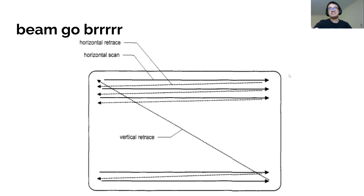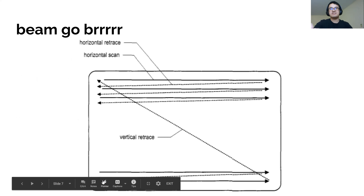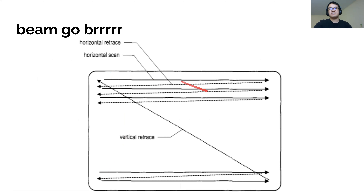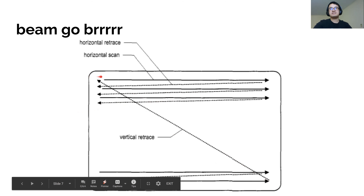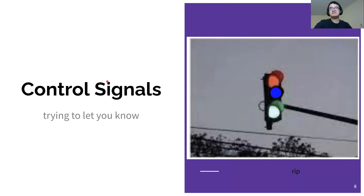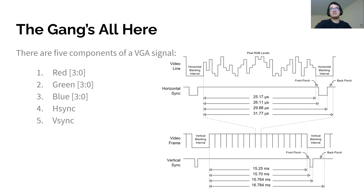Here's a diagram demonstrating that idea. The electron gun goes sideways across the screen, then moves on to the next line, repeating over and over again until it hits the very end of the screen, then resets back to the top left. Every VGA monitor needs control signals to work. There are five of them: the red, green, and blue signals, plus H-sync and V-sync, which stand for horizontal sync and vertical sync.